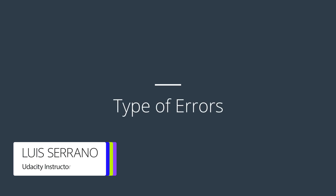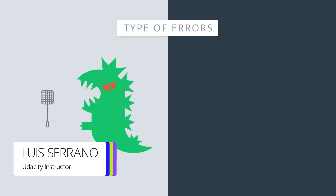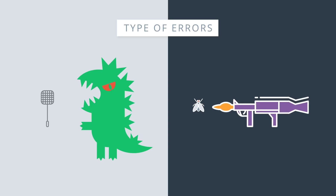So let's talk about life. In life there are two mistakes one can make. One is to try to kill Godzilla using a fly swatter. The other one is to try to kill a fly using a bazooka. The problem with the fly swatter is that we're oversimplifying the problem — a solution too simple that won't do the job. In machine learning, this is called underfitting. The problem with the bazooka is it's overly complicated when a much simpler solution would do. In machine learning, this is called overfitting.